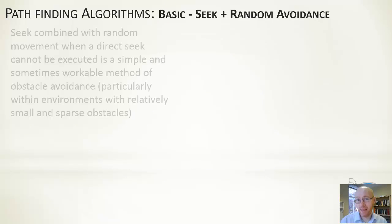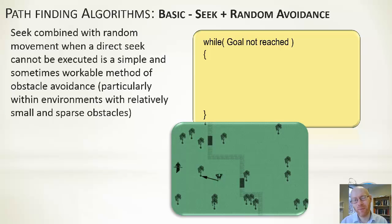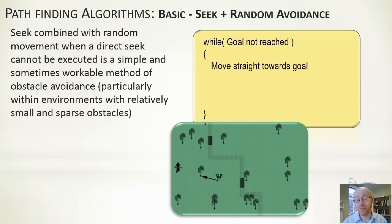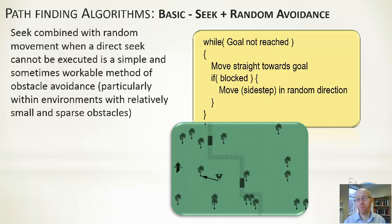Let's start with the most basic form of getting from point A to point B: seeking with a little random obstacle avoidance. Whilst the goal is not reached, we seek toward it — move straight toward it. If something is in our way, if we're blocked, we move to the right or to the left, just trying to step around it. Very simple: head straight to it, if blocked randomly move left or right.